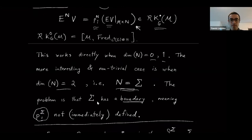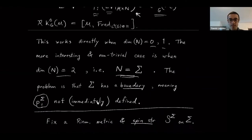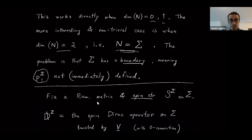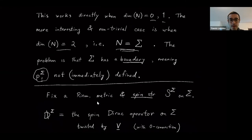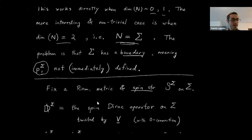There are various ways you could try to get around it. The approach I'm going to take is to impose a boundary condition. It's a relatively simple thing in this case because we're just talking about a surface, so it's not such a complicated thing.